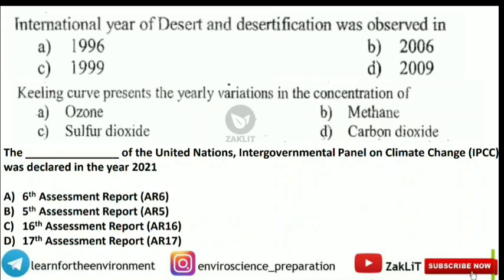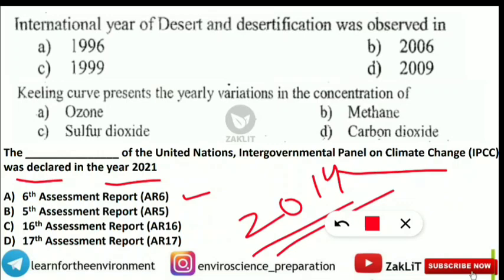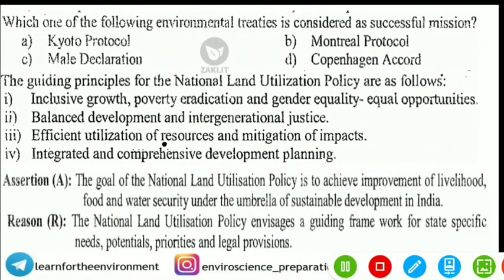The next question asks which assessment report of the IPCC was declared in the year 2021. The correct option is Option C — the Sixth Assessment Report (AR6) — declared in 2021, with some portions published in 2022. Note also: AR5 was in 2014, and the First Assessment Report was in 1990, which was the first year an IPCC assessment report was declared.